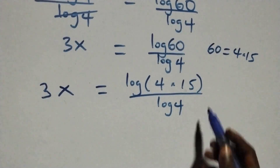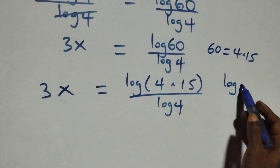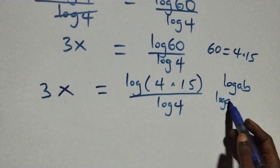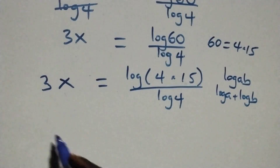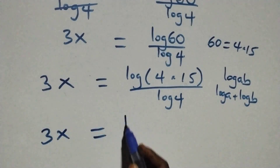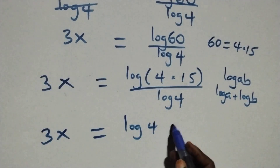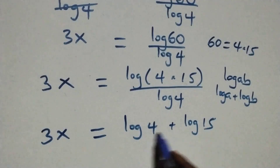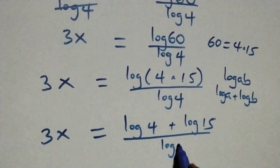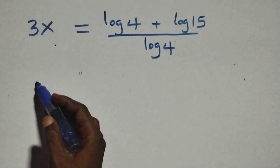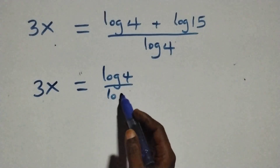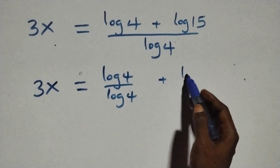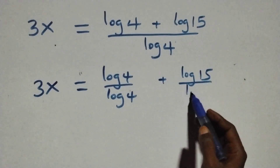Then from here, this follows the law of logarithm: when we have log(a times b), this is the same thing as log a plus log b. That is, here we have 3x equals log 4 plus log 15, all over log 4. Then, next step, we separate this into two fractions and have 3x equals log 4 over log 4 plus log 15 over log 4.